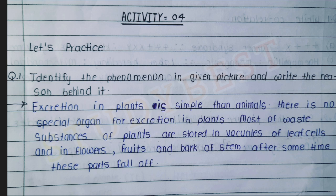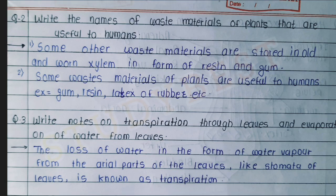The answer: excretion in plants is simpler than in animals. There is no special organ for excretion in plants. Most waste substances in plants are stored in vacuoles of leaf cells, and in flowers, fruits, and bark of stems. After some time these parts fall off. Some waste materials are stored in old and worn xylem in the form of resin and gum, which are useful to humans — for example, gum, resin, and latex of rubber.